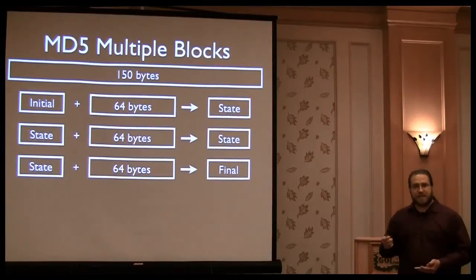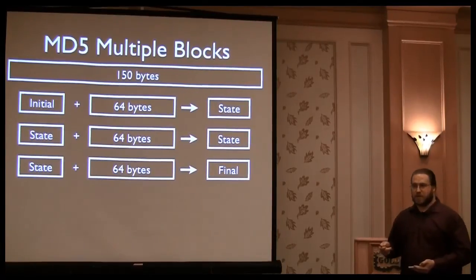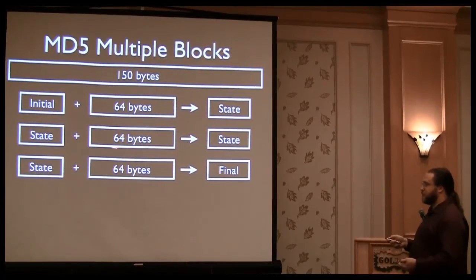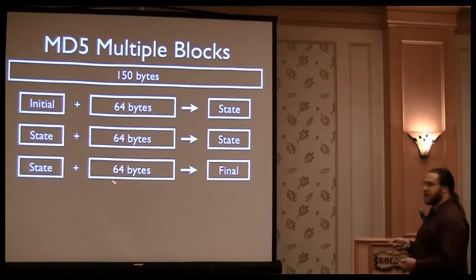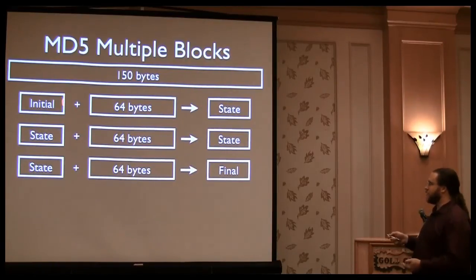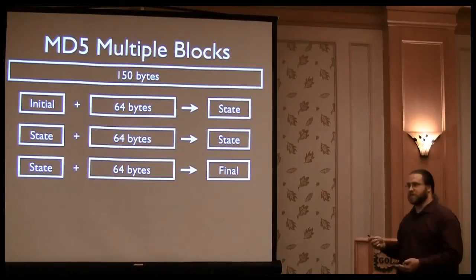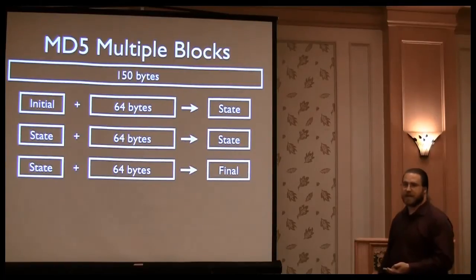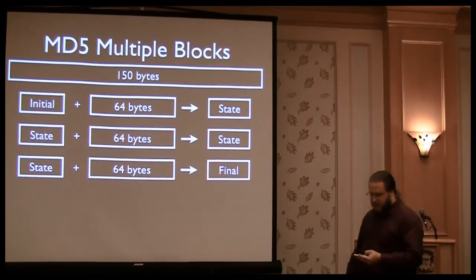What specifically matters for passwords is that the state at the end is simply the state at the beginning of your block plus the data you're hashing. All the other stuff gets condensed into one single state, which is typically the output size of the hash — for things like MD5, SHA-1, et cetera.